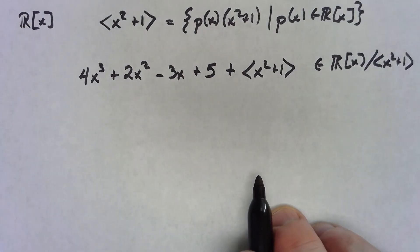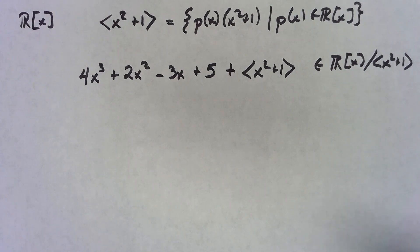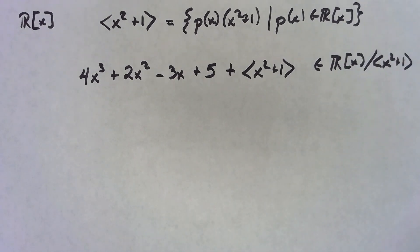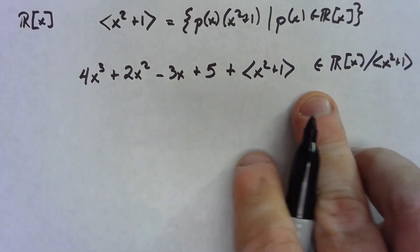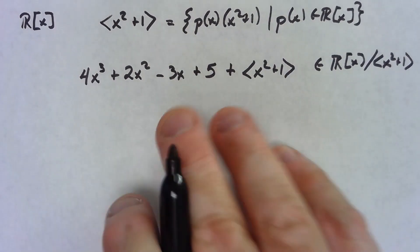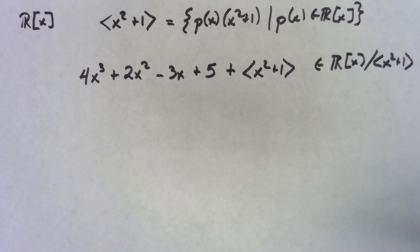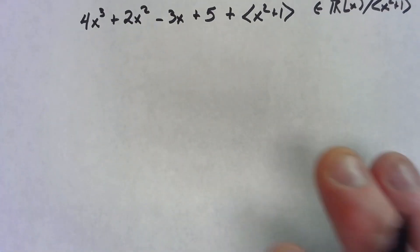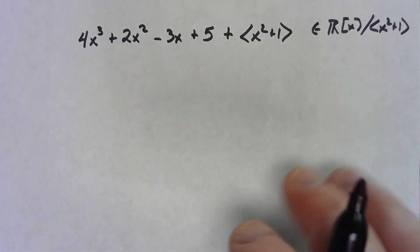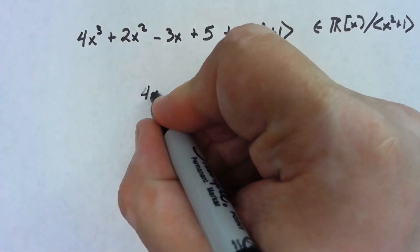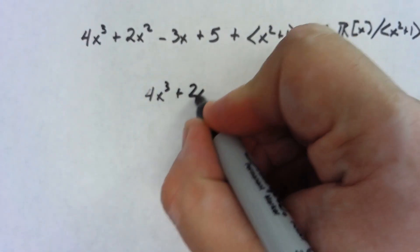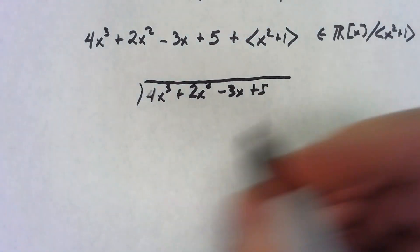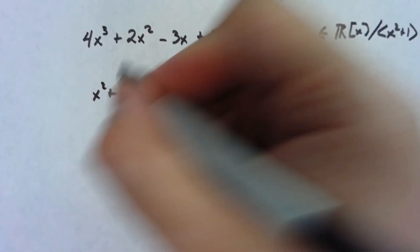This is certainly an element there, but we know that in this factor ring the elements kind of collapse down. One way we can figure out how this element can be expressed in simplest terms is to actually do a polynomial division. So let's take 4x cubed plus 2x squared minus 3x plus 5 and divide it by x squared plus 1.